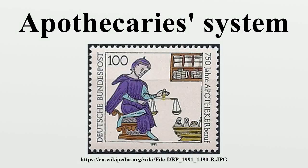The apothecary system of weights is a historical system of mass units that were used by physicians and apothecaries for medical recipes, and also sometimes by scientists. The English version of the system is closely related with the English Troy system of weights, the pound and grain being exactly the same in both.